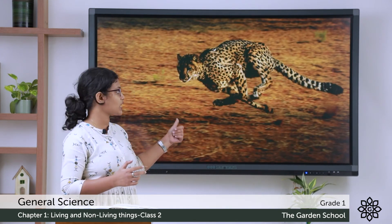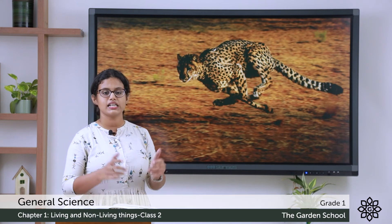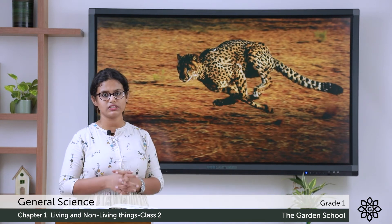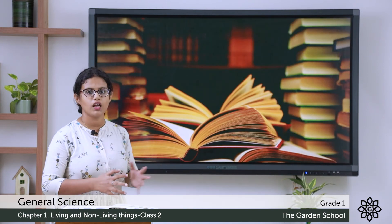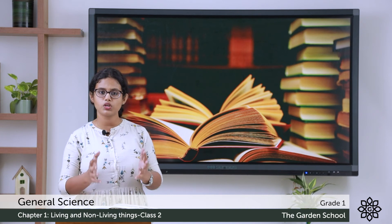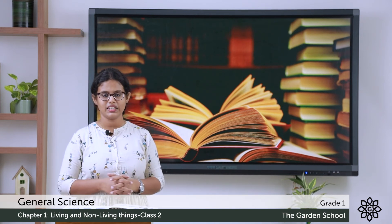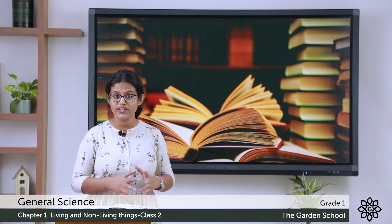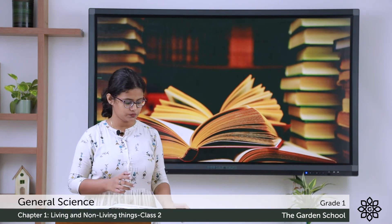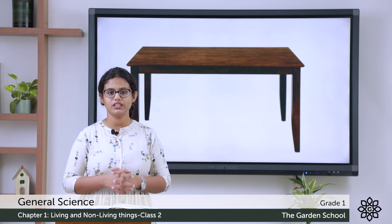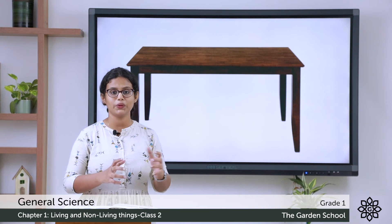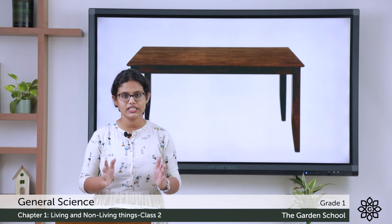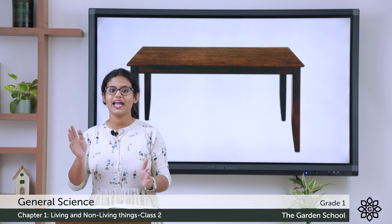What about this animal? Do you know which animal this is? It is a cheetah — the fastest land animal in the world. It is a living thing and it is a natural thing. Then books — is it natural? Do we get books directly from nature? No, we people make them. So a book is a man-made thing and a non-living thing.